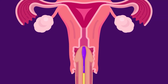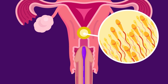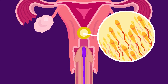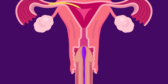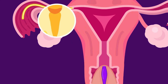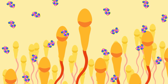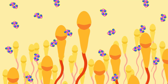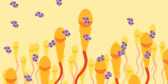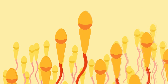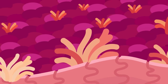Semen containing the sperms is ejaculated high into the vagina — about 100 million sperms during intercourse. The sperms are able to swim up the oviducts of the woman in a liquid made by the man's seminal vesicles and prostate gland. The chemicals in this liquid make the sperm tails beat to propel the sperms along the oviducts.